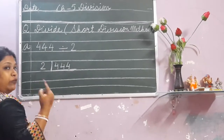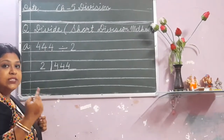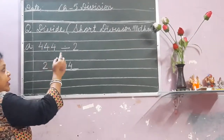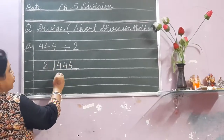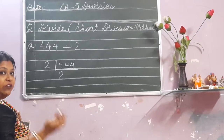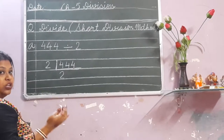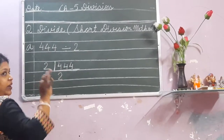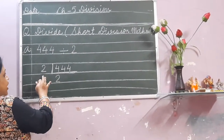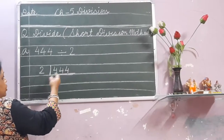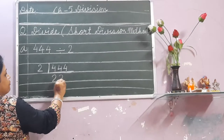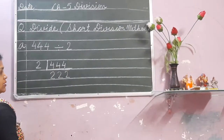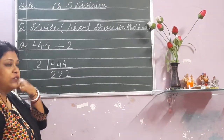So, 2 — and here is one line. You have to read the table of 2: 2 ones are 2, 2 twos are 4. Before, we used to write the quotient over here, but now we have to write the quotient here above. This is the divisor, this is the dividend, this is the quotient — no remainder here. 2 twos are 4, again 2 twos are 4, and 2 twos are 4. This is the answer — short division method.